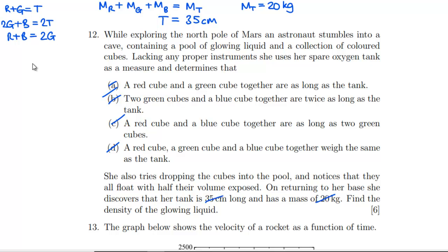We need to find the density of the glowing liquid. All cubes float with half their volume exposed, which means the density of red, blue, and green are all equal, and each equals half the density of the liquid. We have four equations with three unknowns now that T is known, so let's solve the simultaneous equations.